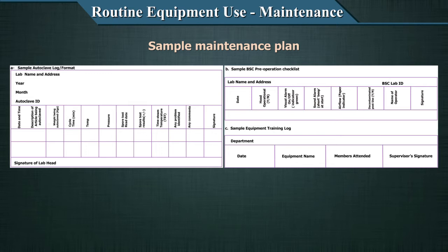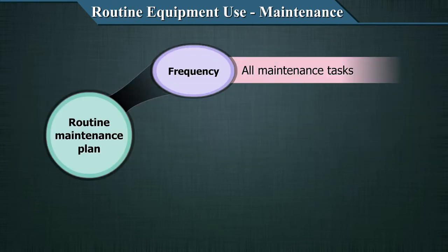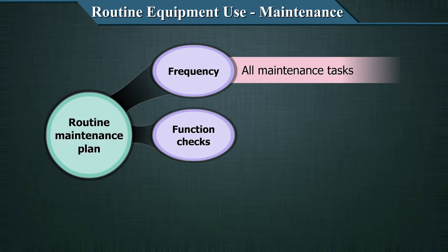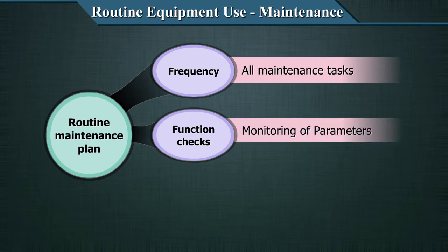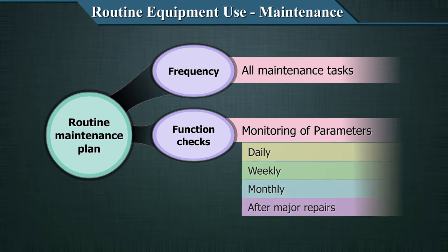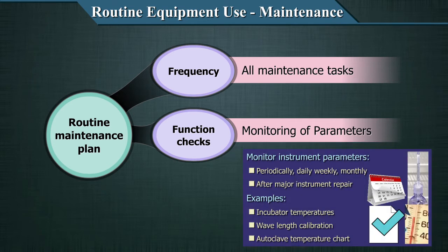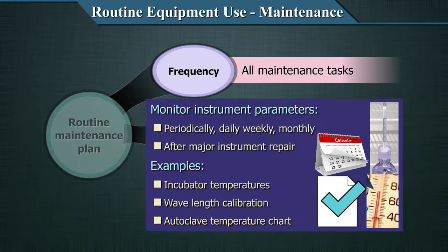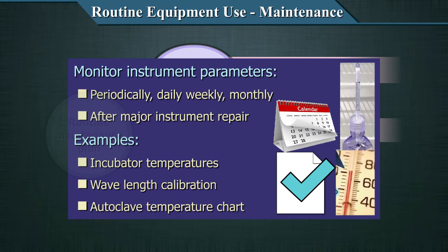The maintenance plan should also include function checks, which involve monitoring of instrument parameters periodically — daily, weekly, and monthly. Some examples of function checks include incubation temperature, wavelength calibration, autoclave temperature chart, and others. These should be monitored and documented as required.